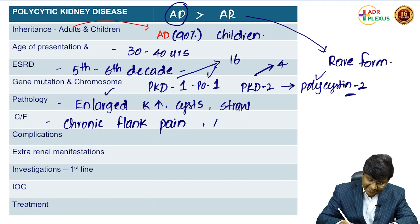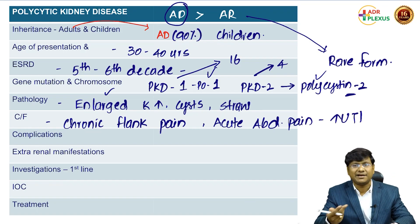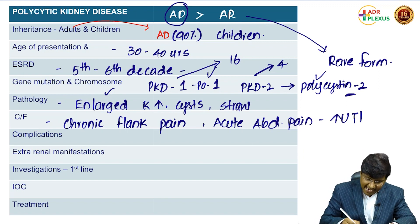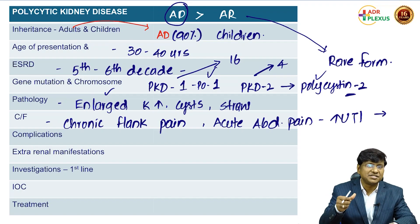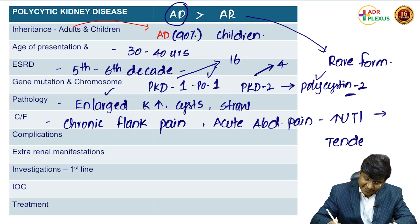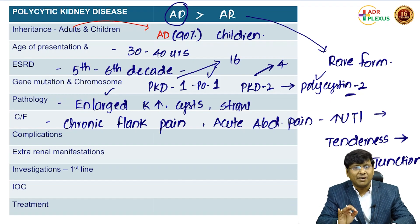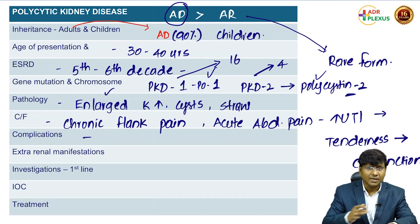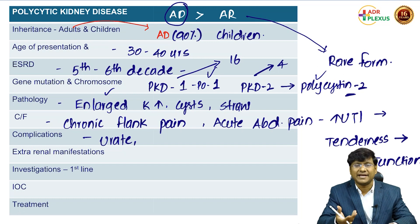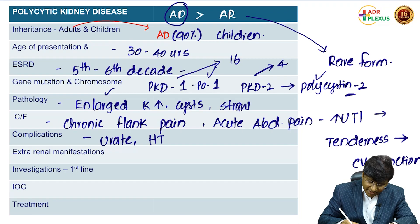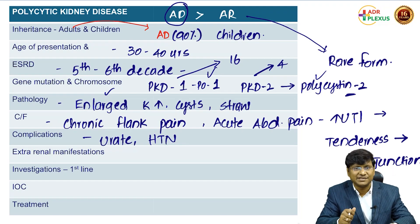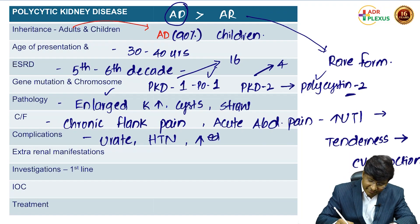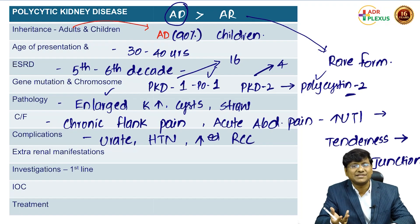Chronic flank pain can be elicited by applying pressure over the costovertebral junction showing tenderness. Complications of ADPKD include urate calculi in 15–20% of patients. In 20–30% of patients, hypertension develops due to increased renin levels from intrarenal ischemia. These patients are also at increased risk of renal cell carcinoma in both kidneys.